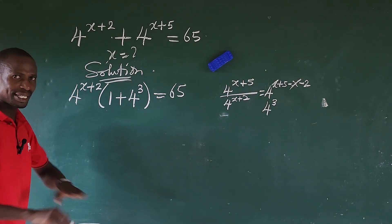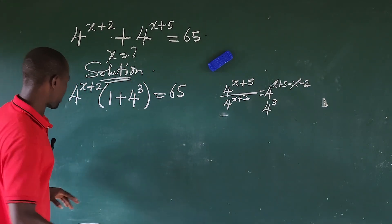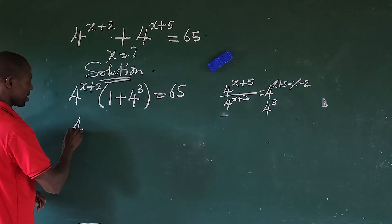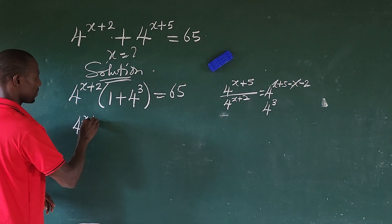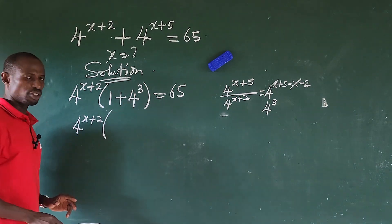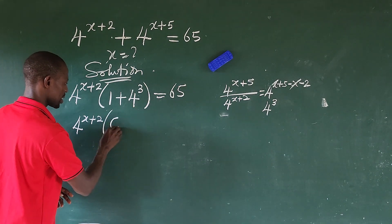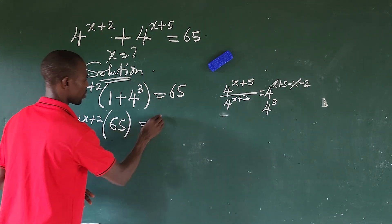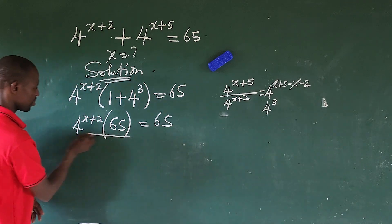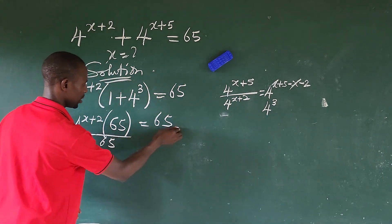This is the best trick ever. So from here, you now have 4 to the power of x plus 2 times the quantity 1 plus 4 to the power of 3. 4 to the power of 3 gives us 64. 64 plus 1 gives us 65.